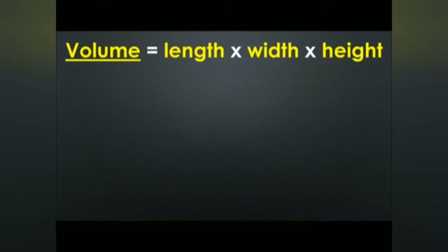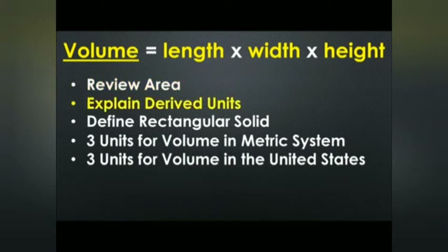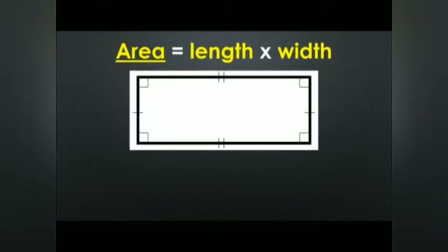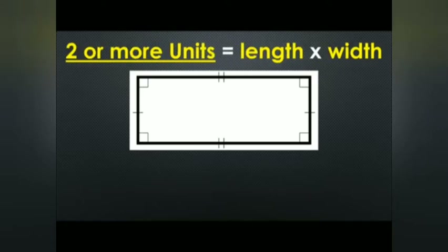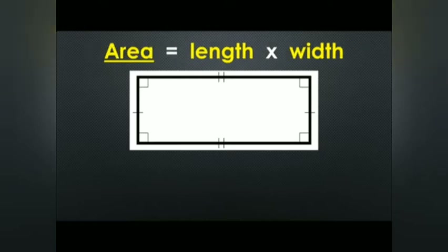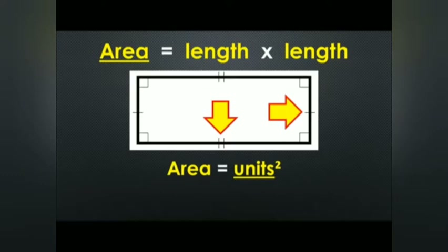In this video, we will review the area formula, explain derived units, and define rectangular solid. Then we will cover 3 units of volume in the metric system and 3 units in the United States system. Derived units are what you have when you take 2 or more units and combine them. Area is length times width, giving units squared, since it combines 2 lengths.